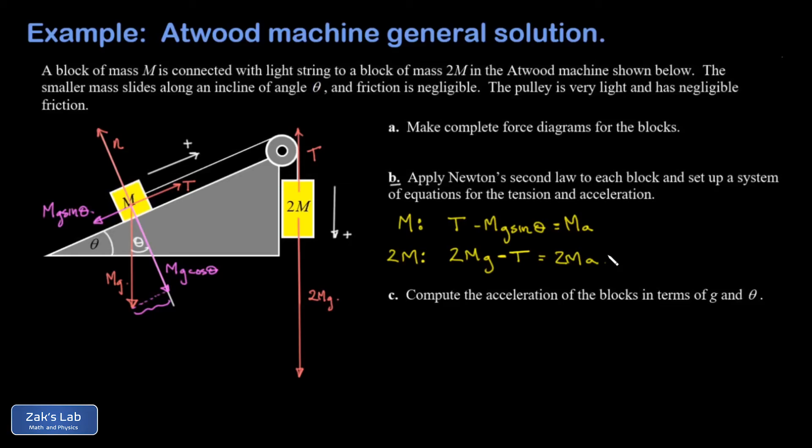Finally, in part C, we want to solve this system. So we go ahead and add these two equations together. We're already set up for elimination to work and eliminate the tension in the string. And on the left-hand side, when I add them, I get a 2Mg minus Mg sine theta. And on the right-hand side, I get 3M times A. And the M's cancel out. And I can factor G out of the left-hand side. And we go ahead and solve for A. And it turns out A is G over 3 times the quantity 2 minus sine theta.